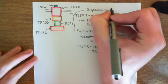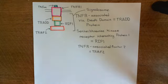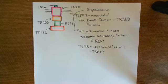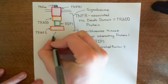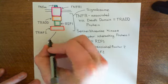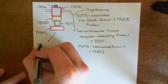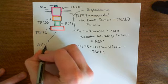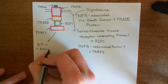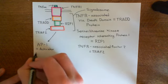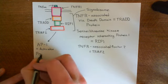This signalosome is going to lead to the activation of two transcription factors. One of them is AP-1, which stands for activator protein 1, and the other is NF-kappa-B, nuclear factor kappa B.